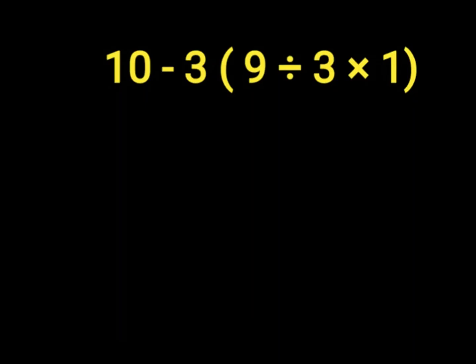Welcome to my channel. Here we have 10 minus 3 parenthesis 9 divided by 3 times 1. So first of all, our parenthesis, which is 9 divided by 3 times 1. 9 divided by 3 will give us 3, and 3 times 1. We put it in our parenthesis, then we bring our 10 minus 3, then 3 times 1.